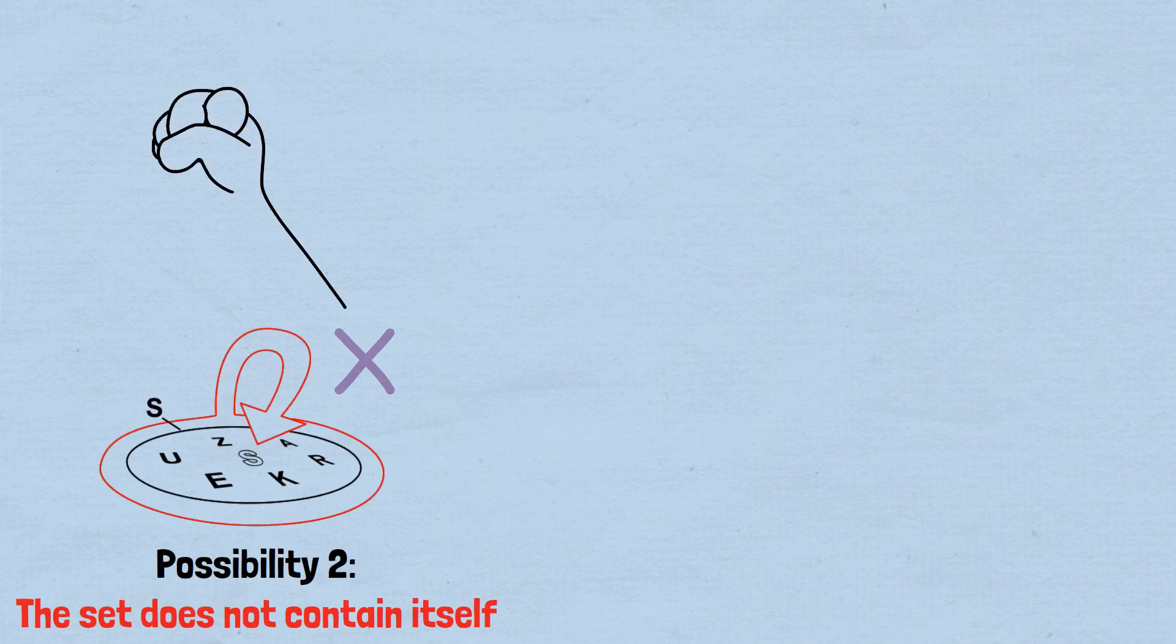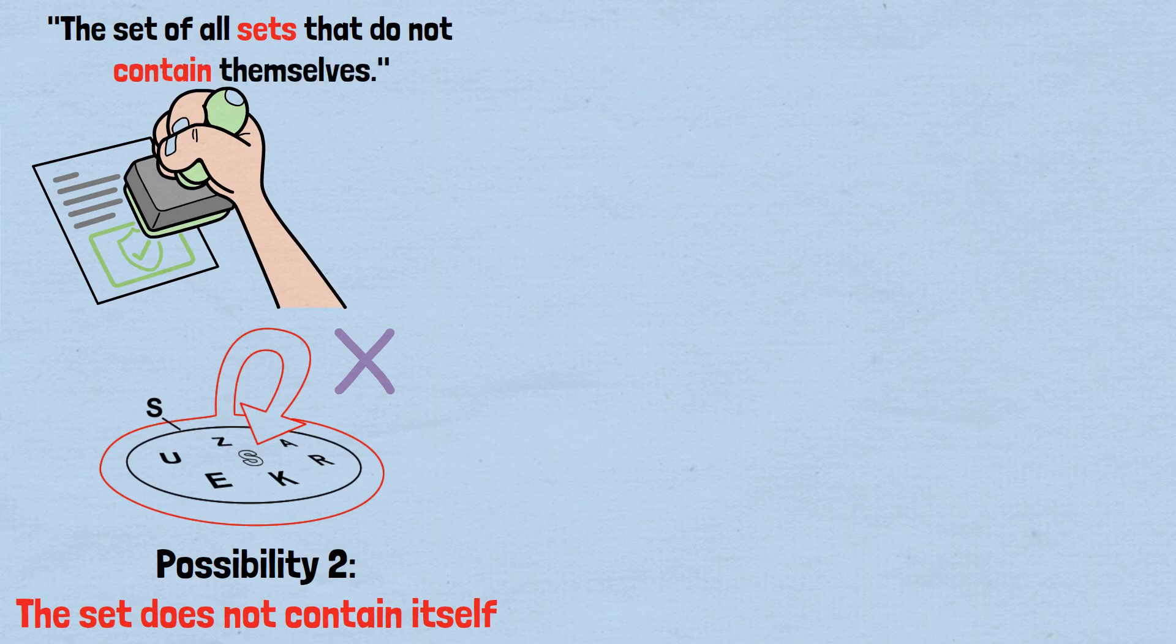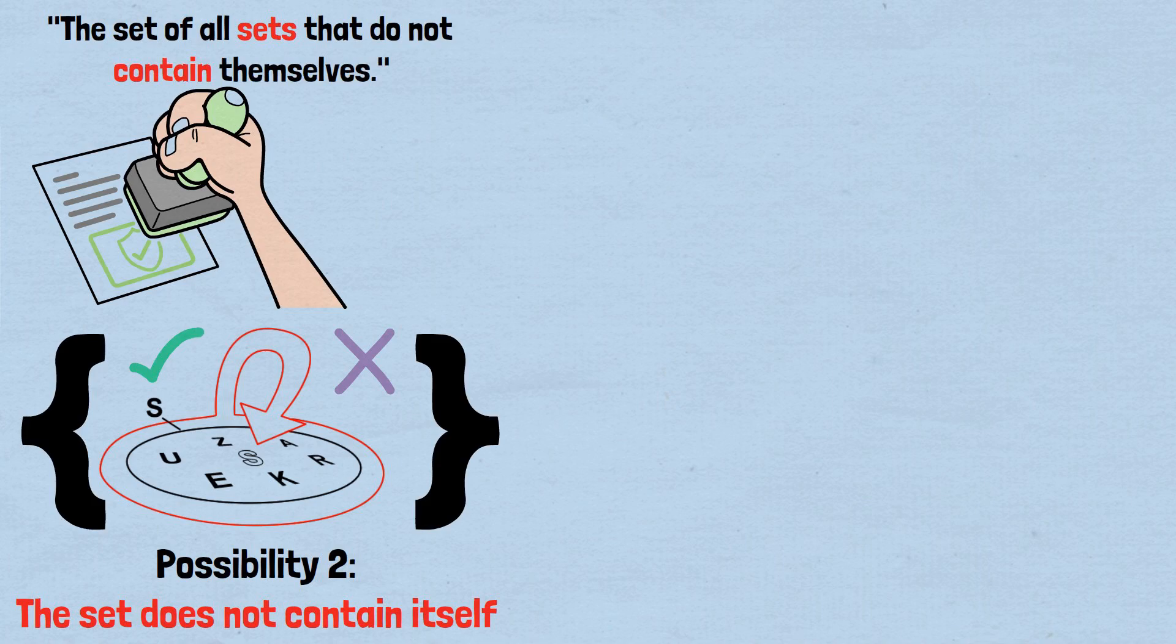Possibility 2: The set does not contain itself. If this set doesn't contain itself, then it meets the criterion for membership in the set of all sets that do not contain themselves. That means it should be in the set, which means it contains itself. Another contradiction.